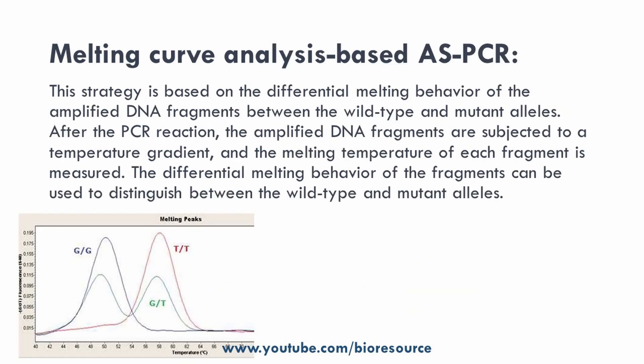The second strategy is melting curve-based allele specific PCR. This strategy is based on the differential melting behavior of the amplified DNA fragments between the wild type and the mutant. As you can see in the image, there is a different melting temperature for the wild type and the mutant sequences. If there is a heterozygous mutant, the melting Tm peak will shift, and based on this we can genotype the condition.